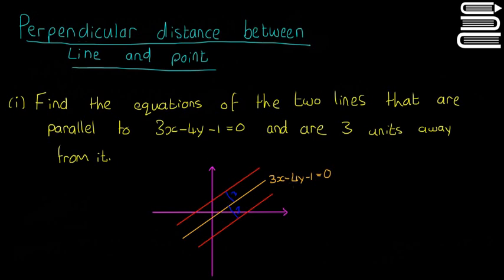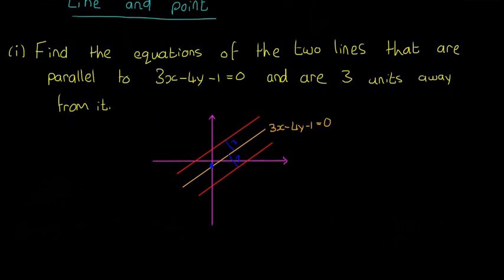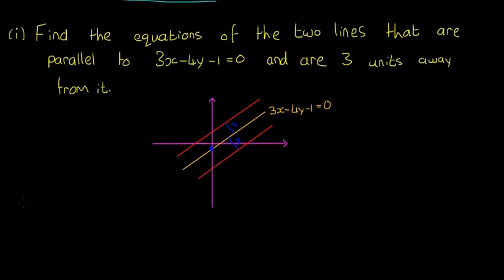The way we're going to solve it — the first thing we're going to do is find any point on this orange line. The easiest one we're going to find is the one where it hits the y-axis, the point I've labeled in blue. So what do we know about the y-axis?